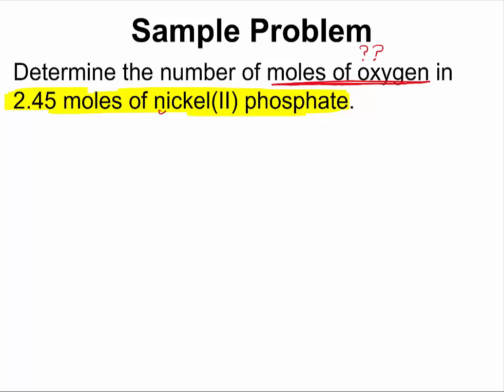We have nickel(II), so we have nickel with a charge of plus 2. And then we have phosphate, which is PO4 with a charge of negative 3.